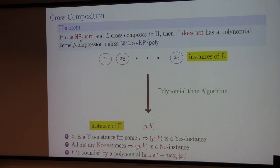The properties are: if at least one of the input instances is a yes instance, then the output instance should be a yes instance; if all input instances are no instances, then the output instance should be a no instance. And importantly, the parameter k should be polynomial in log T plus max |xi|. The main theorem says: if L is NP-hard and we can cross-compose L into pi, then pi does not have a polynomial kernel unless something bad happens.